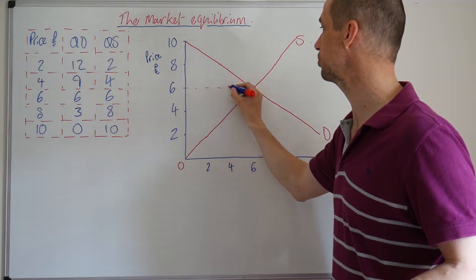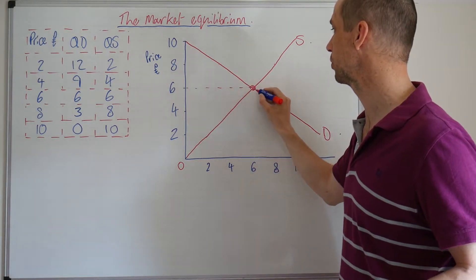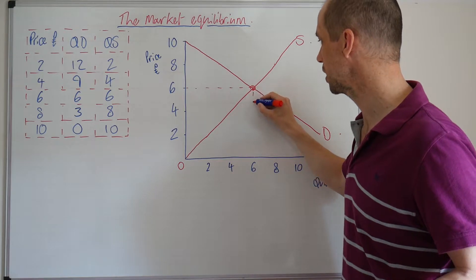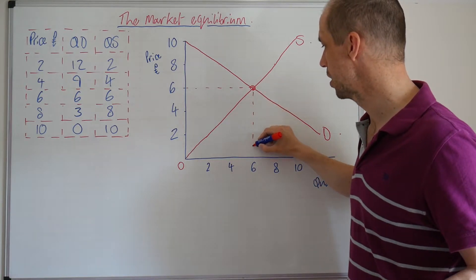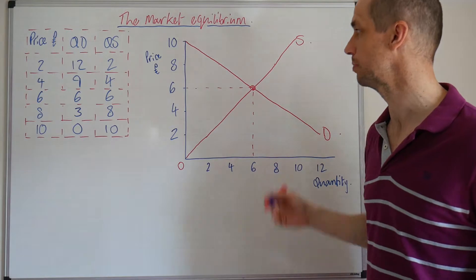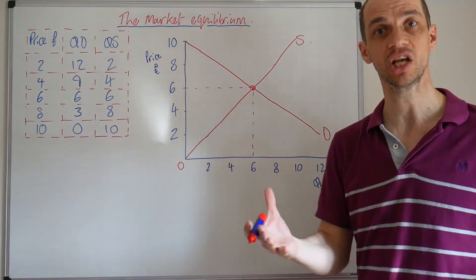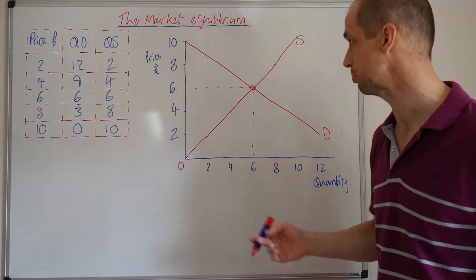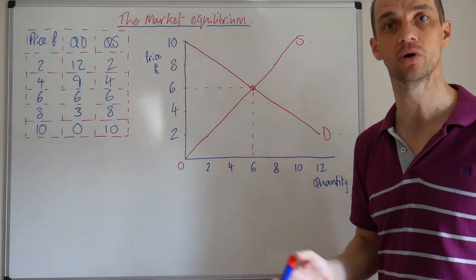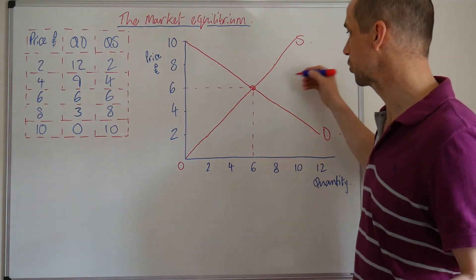So therefore this represents the clearing for the market where supply equals demand and where the corresponding price would be six pounds and six as a quantity of output, the quantity supplied and demanded to the marketplace.